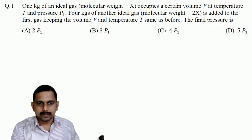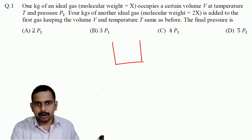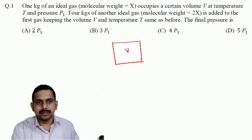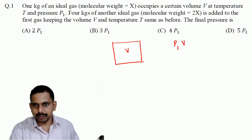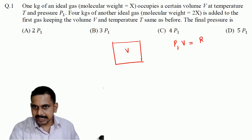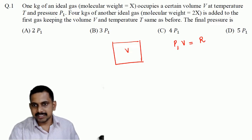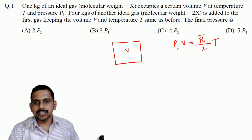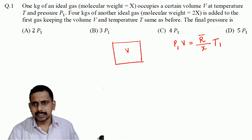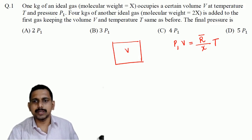There is a vessel of volume V and initially there is a pressure P1. So here I can write P1 times V equals R-bar, the universal gas constant, divided by the molecular weight X, into temperature T. We are keeping the temperature the same, so temperature T.